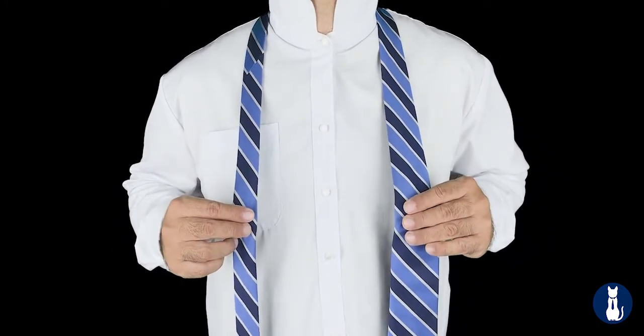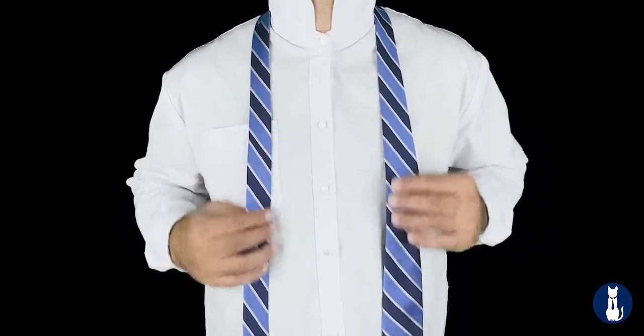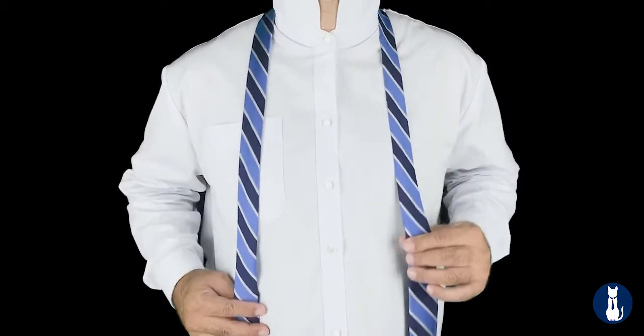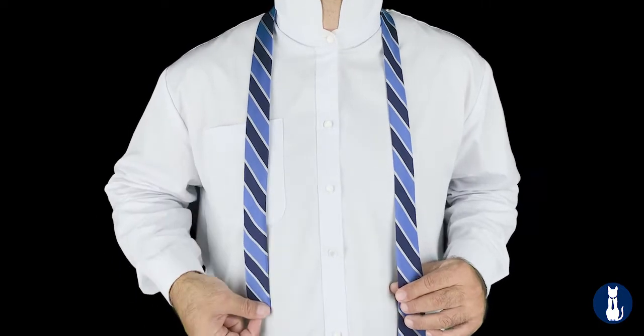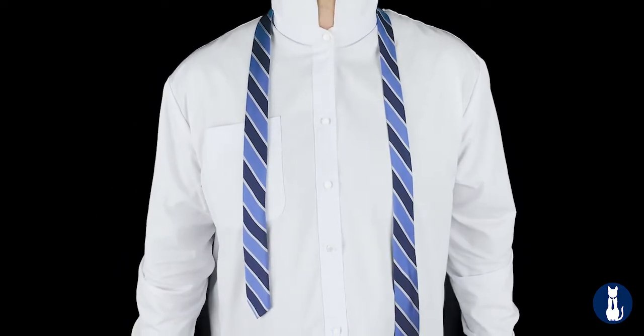You do that by pulling on the fat end so that the skinny end hangs at the bottom of your rib cage. Remember the starting point as this is how you adjust to make the fat end hang in front of your belt line after you're done.